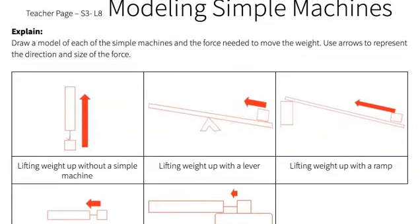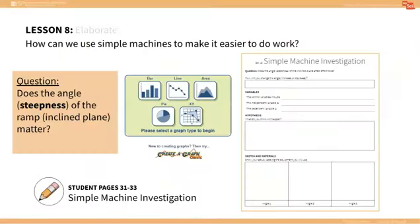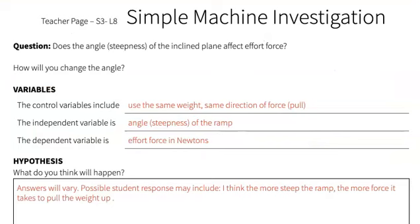In the Elaborate portion of this lesson, students will plan and conduct an investigation to determine how certain variables affect efficiency of simple machines. They will focus this investigation on the inclined plane. They will use student pages 31 through 33 to complete this investigation.